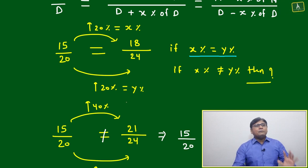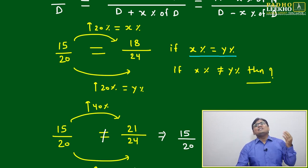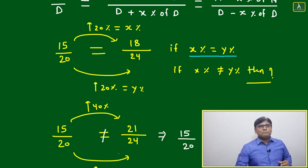We have to decide, is 15 by 20 equal to 18 by 24 or is it not equal to 18 by 24? Then 15 by 20, just we will look. If this 15 to 18, this is 20 percent change, that is the numerator change, that is x percent.